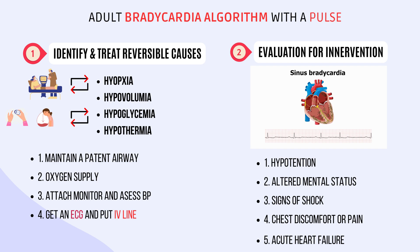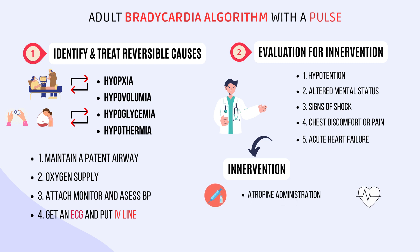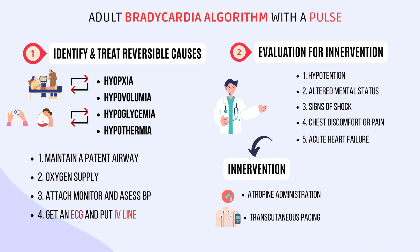If none of these signs are present, we just need to monitor the patient and observe. But if any of these signs persist, we need to intervene. The first intervention in the ACLS bradycardia algorithm is to administer atropine, a medication that increases heart rate by blocking the action of the vagus nerve. We should wait a few minutes to see if the heart rate improves. If atropine does not improve the heart rate, the next intervention is to consider transcutaneous pacing, a temporary measure to increase heart rate by delivering electrical impulses to the heart. If atropine and transcutaneous pacing do not improve the heart rate, the next step is to administer a medication such as dopamine or epinephrine to increase the heart rate and blood pressure. We should monitor the patient closely for any adverse effects of the medication.